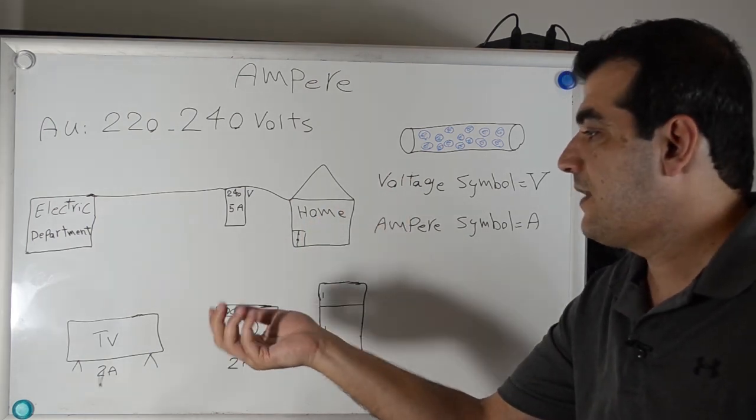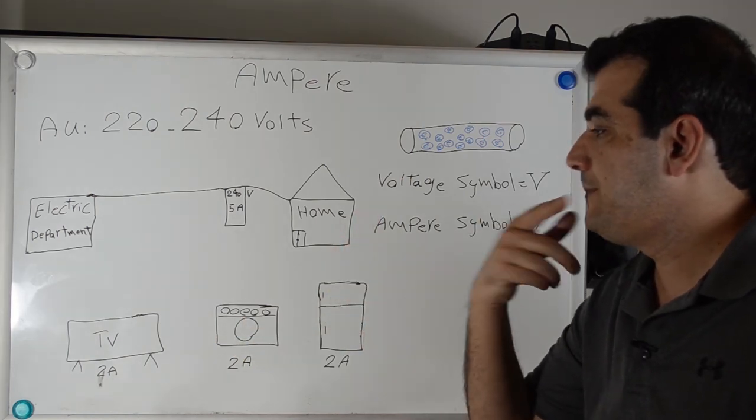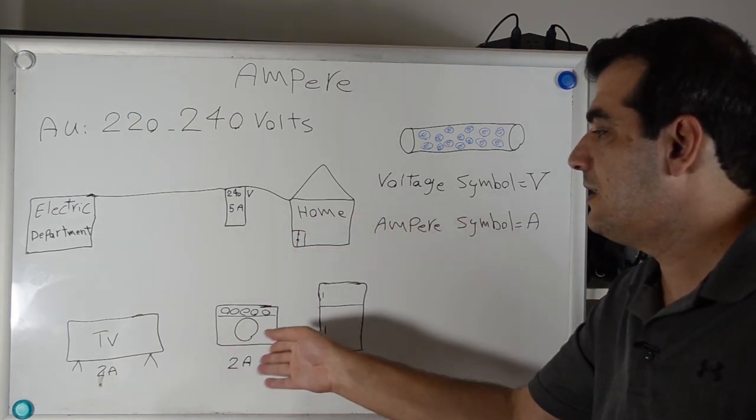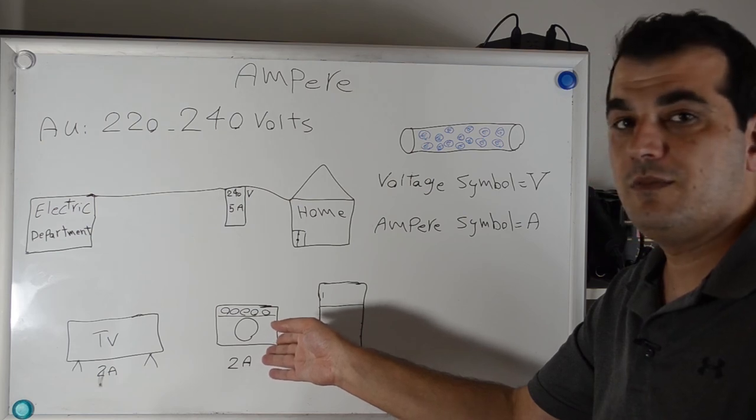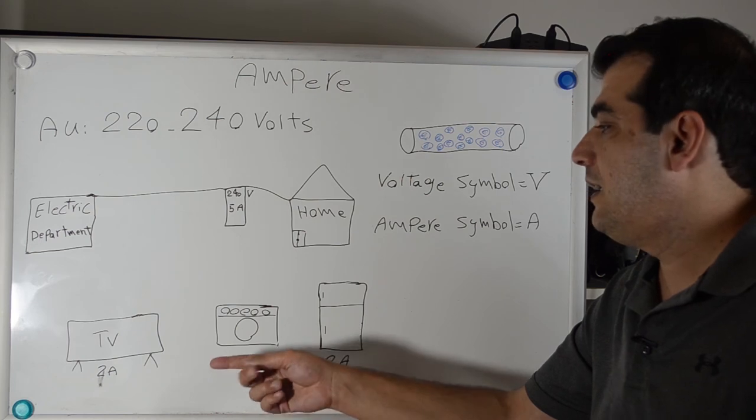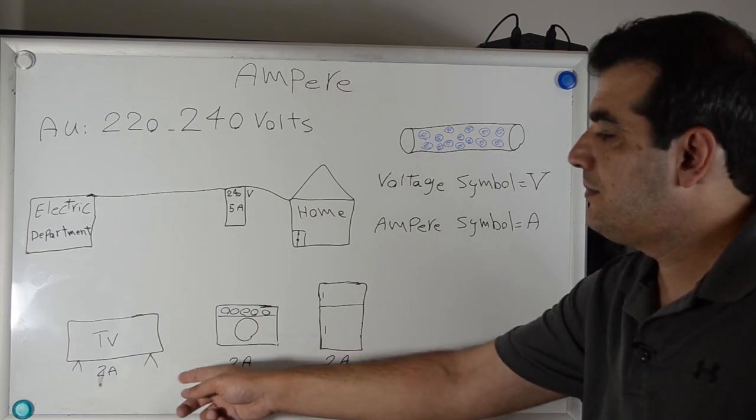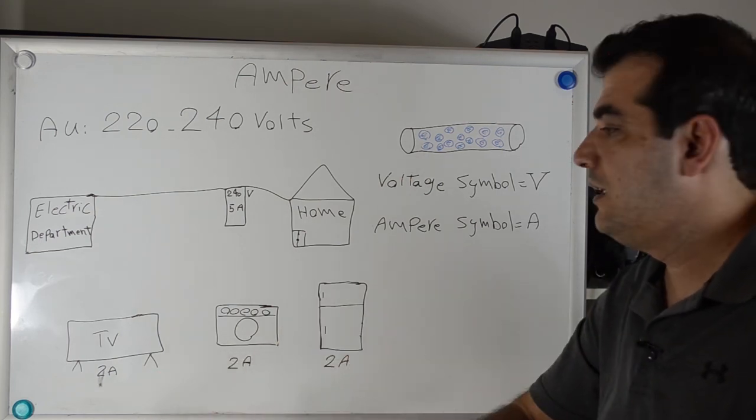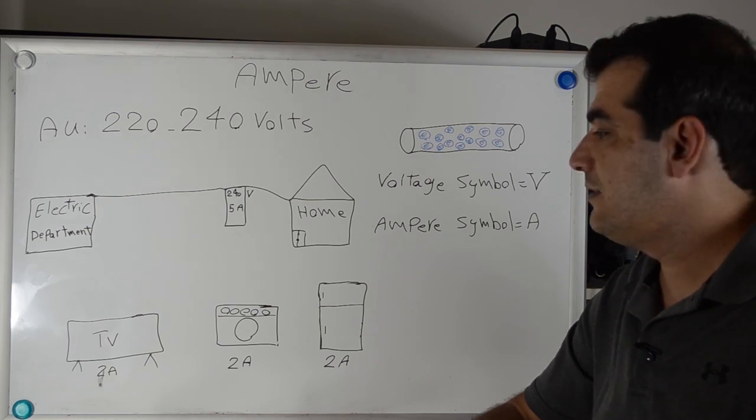All of the appliances have 2 amps. First, turn on the TV and watch movies. After that, turn on the washing machine, which uses 2 amps. Totally, that's 2 amps plus 2 amps equals 4 amps. You don't have any problem and everything is working fine.